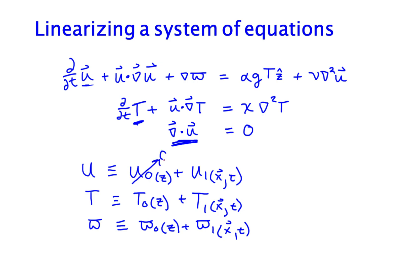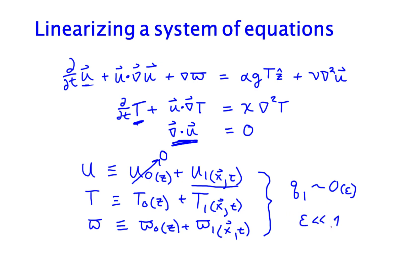For the analysis I'm going to do right now, I'm going to set u0 to zero, so u is only in the fluctuations. In our linearization analysis, we're going to assume that quantities with a subscript of 1 are order epsilon, and we're going to assume epsilon is much, much less than 1. This is the key part of the actual linearization approximation — the decomposition into 0 and 1 is fully general, but our power comes from making an approximation that the fluctuations are small, of order epsilon.